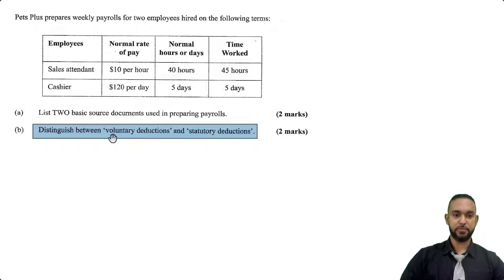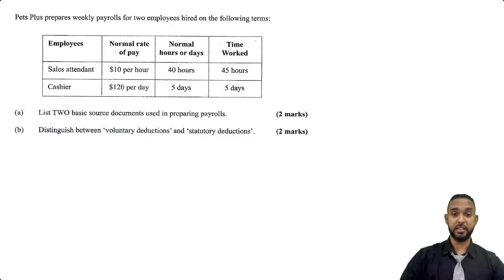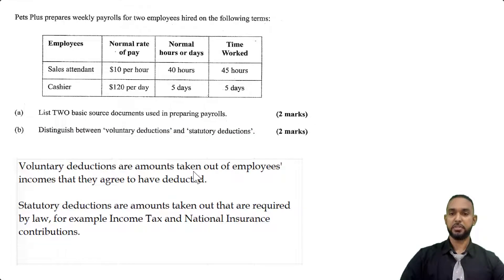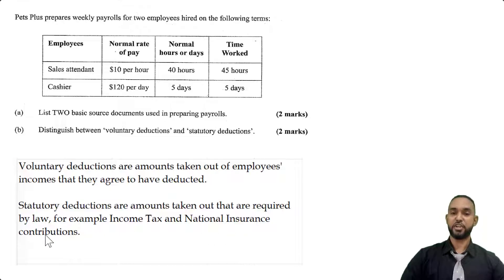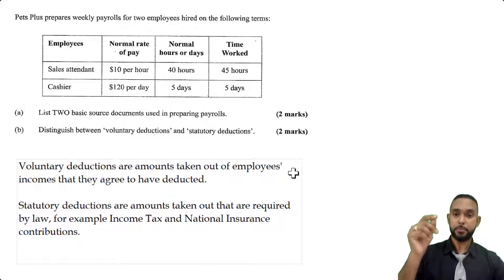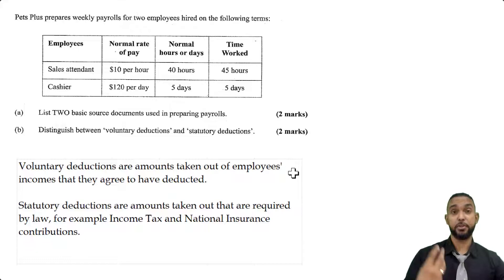The next part says distinguish between voluntary and statutory deductions — something you really should know. Voluntary deductions are amounts taken out of employees' incomes that they have agreed to have deducted. Statutory deductions are amounts taken out that are required by law, for example income tax and national insurance contributions. If you have different definitions you'd like to share, please put them in the comment section below — sometimes your articulation may be better than mine.